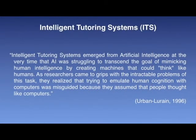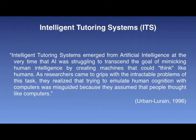In a quote from Urban Lorraine (1996), moving on to the next type of system within the learning object landscape: intelligent tutoring systems, or ITS, emerged from artificial intelligence at the very time that AI was struggling to transcend the goal of mimicking human intelligence by creating machines that could think like humans.